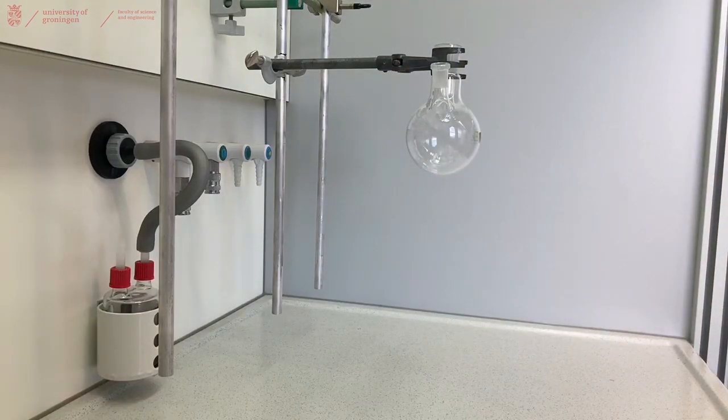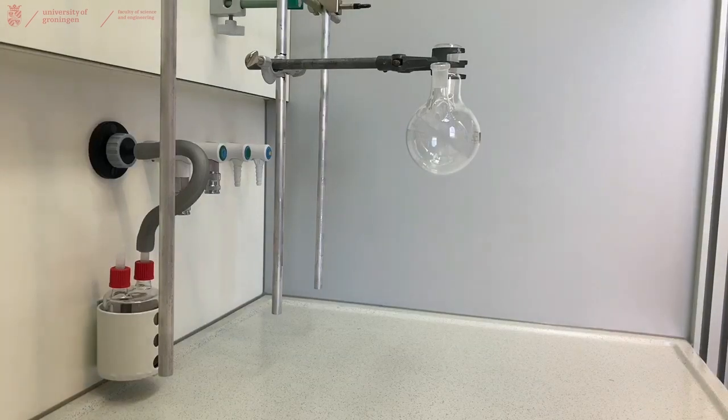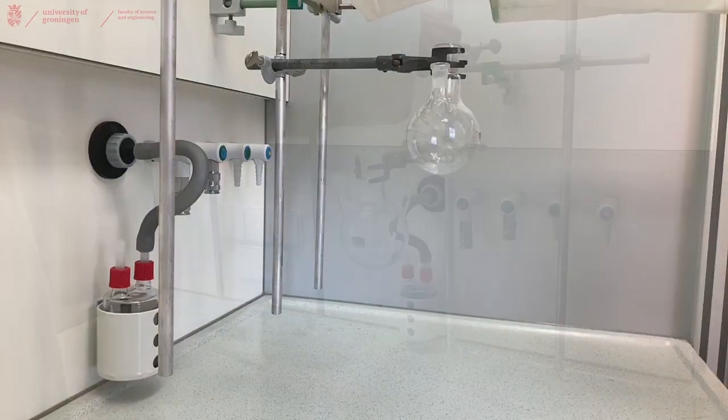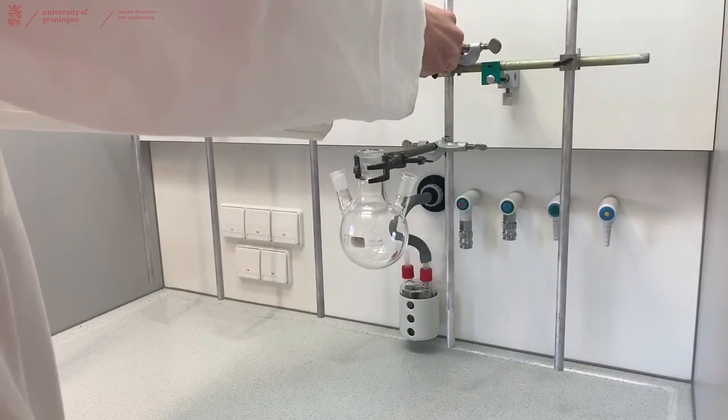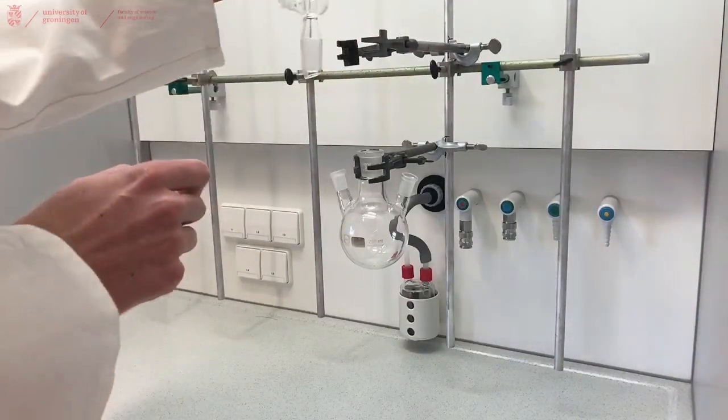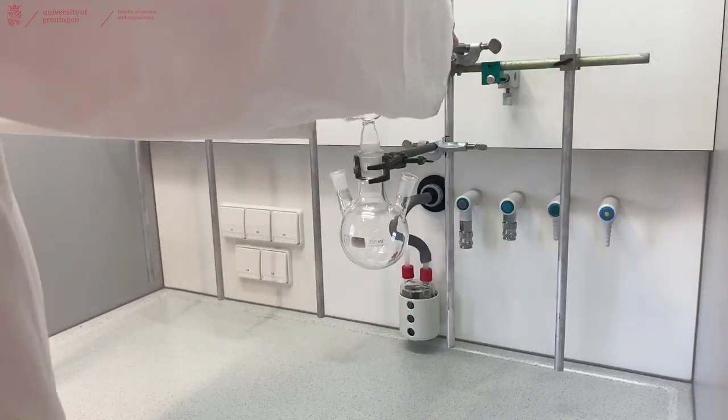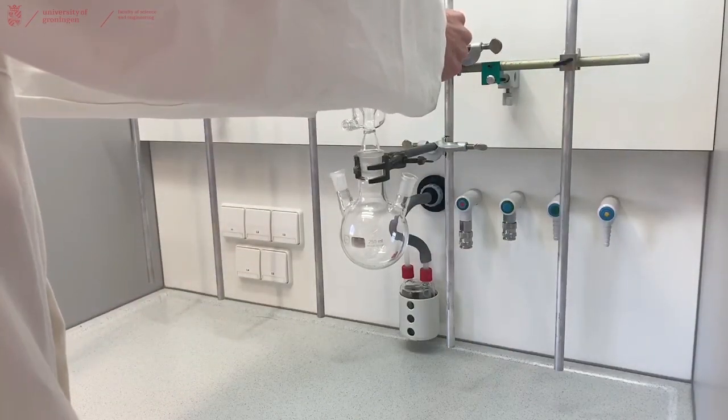Now place the cooler with the clamp on top of your three neck flask. The cooler should just sit in your three neck flask and the clamp is only there to support it and prevent it from tipping over.